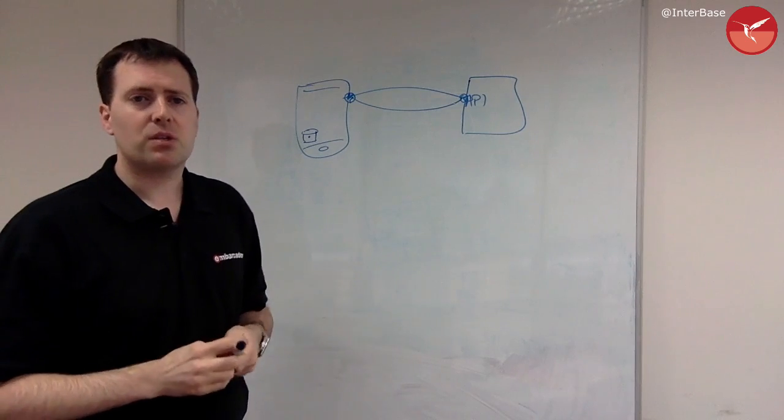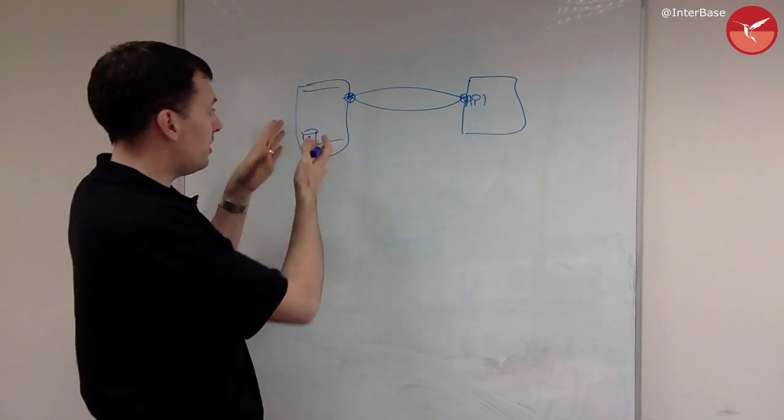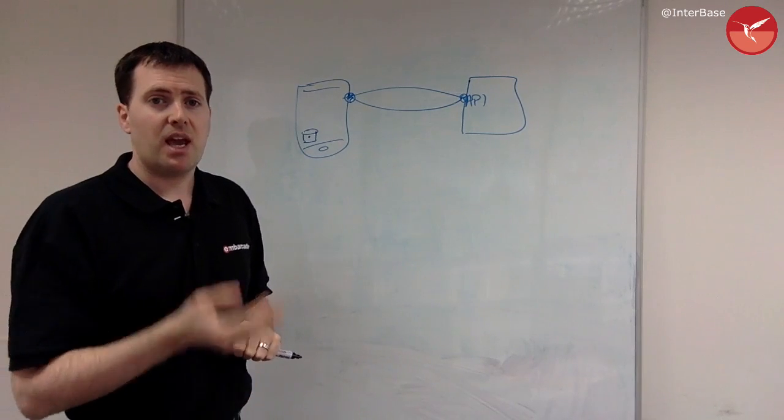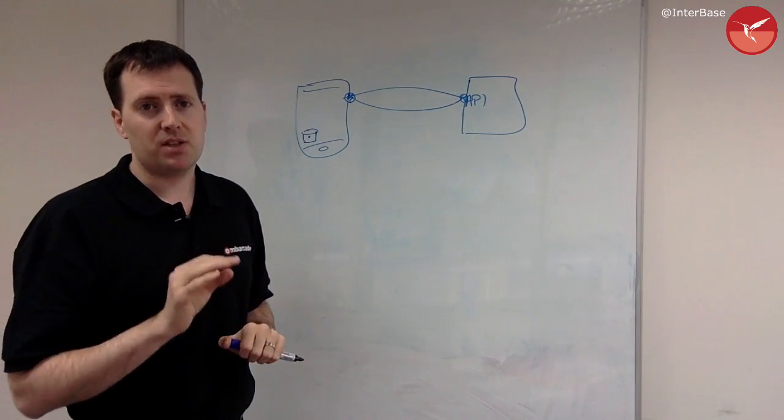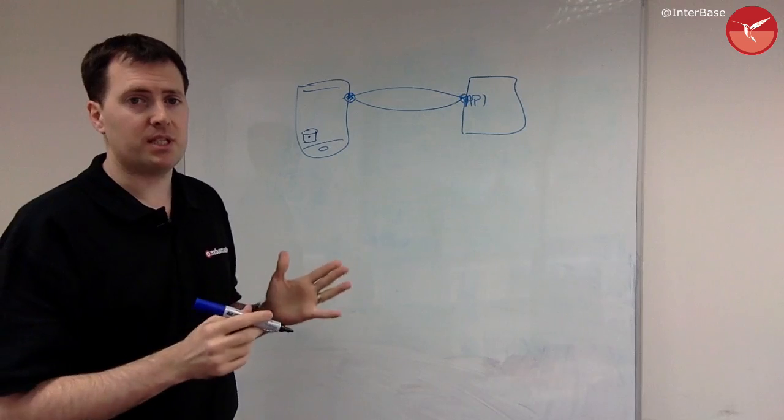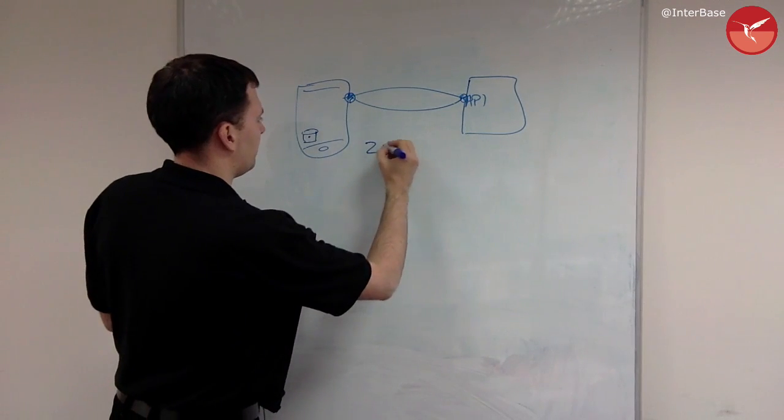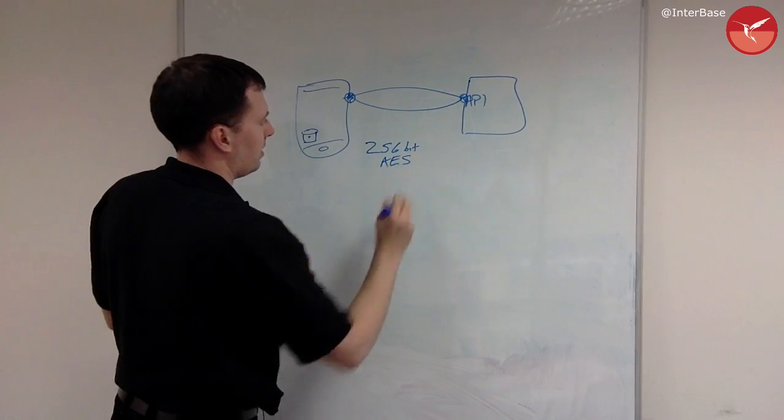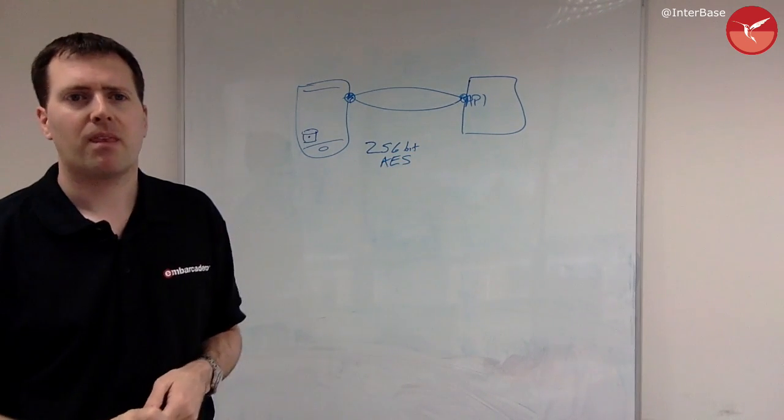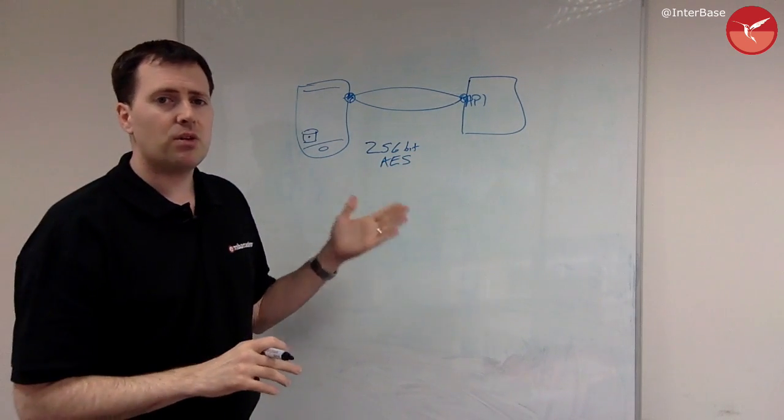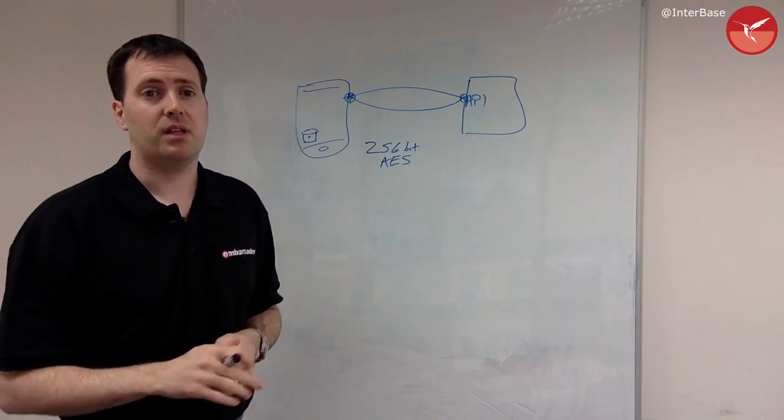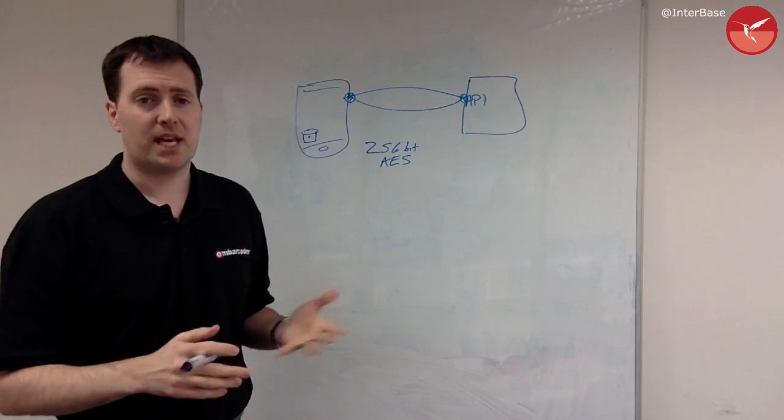We need to make sure that data when it is on the device, on the disk, is known as being at rest. At-rest data must be securely encrypted using 256-bit AES strength encryption at a minimum. Without this, you will not be able to reach industry standards for encryption and safeguarding of stored data.